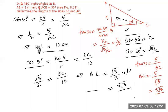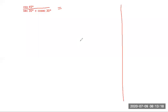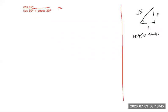Let's move to the second question. Find the value of cos 45 divided by (sec 30 plus cosec 30). Do you remember all the values? What is cos 45? When the angle is 45, both legs are the same — we take them as 1 and 1, so the hypotenuse is √2. Therefore cos 45 equals sin 45 equals 1/√2.